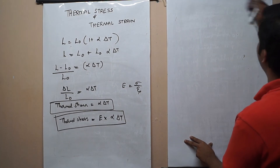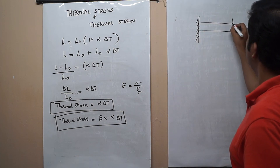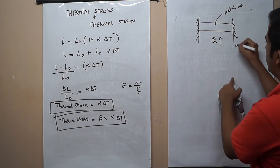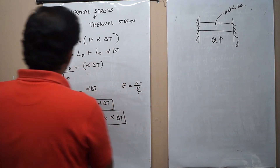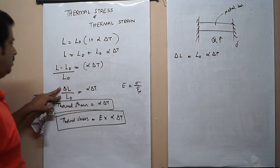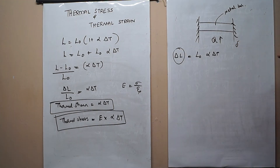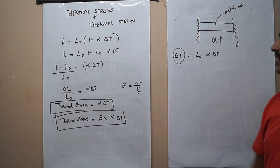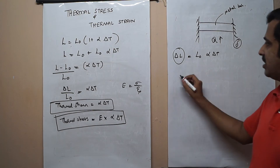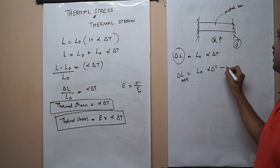Now I can find the equation for thermal stress and thermal strain when the fixed end can also yield. This is our fixed end, and this is my metal bar. Suppose under the application of heat, this fixed end gets deformed by an amount delta (δ), and our expression will vary. We have ΔL = L₀·α·ΔT. But this ΔL means the total or net expansion occurring to the metal bar, including the deformation that happened to the rigid end. So the net elongation equals L₀·α·ΔT minus δ.